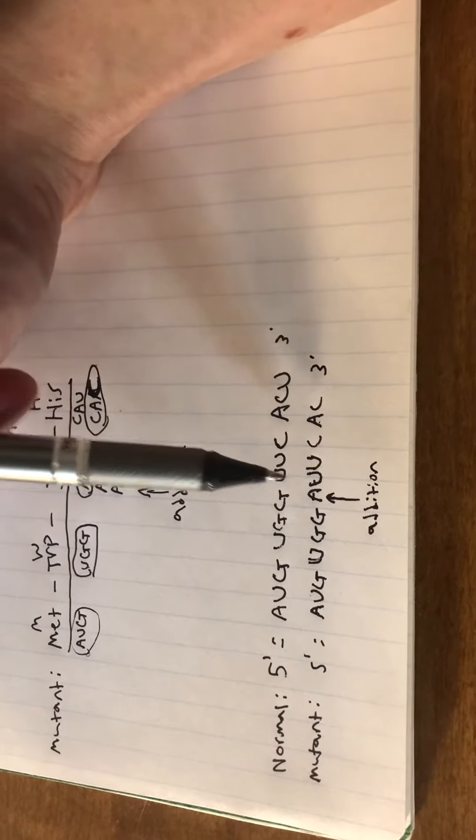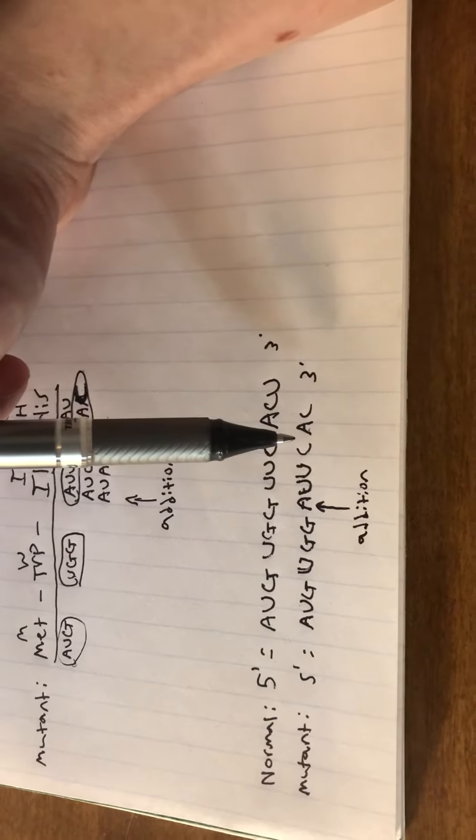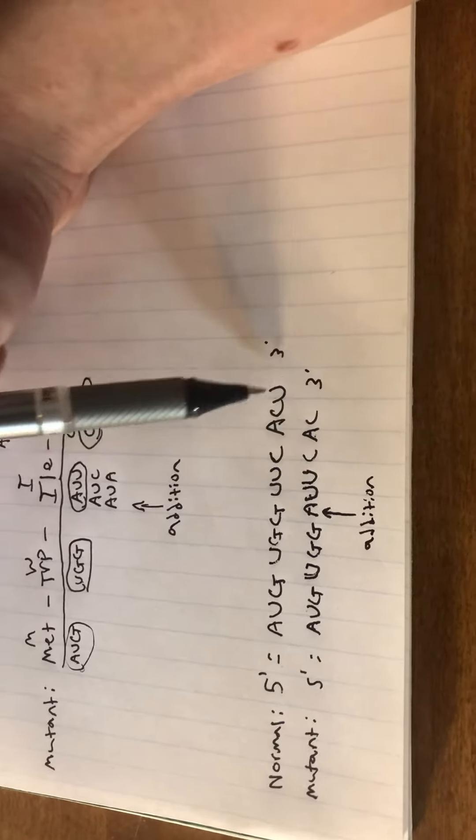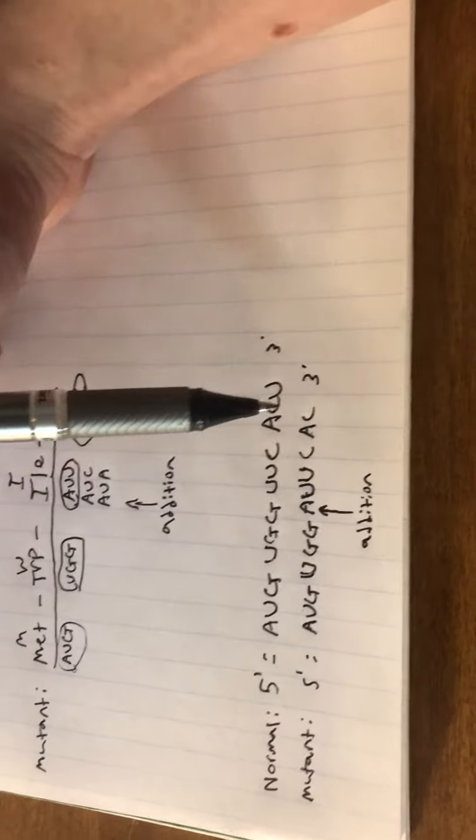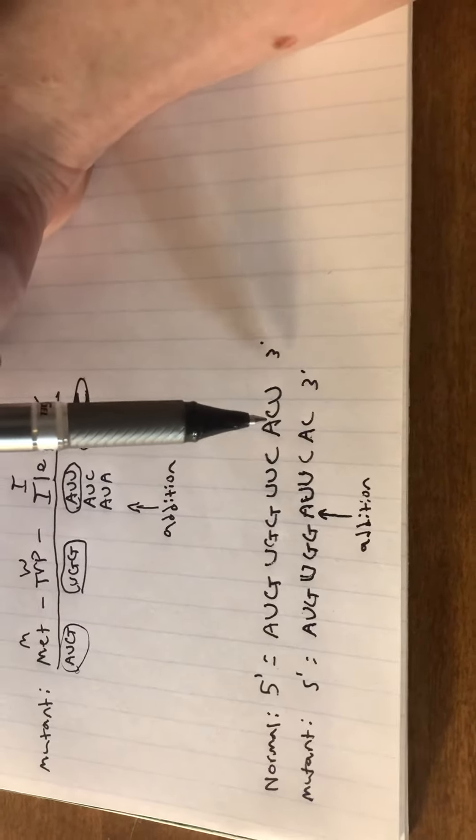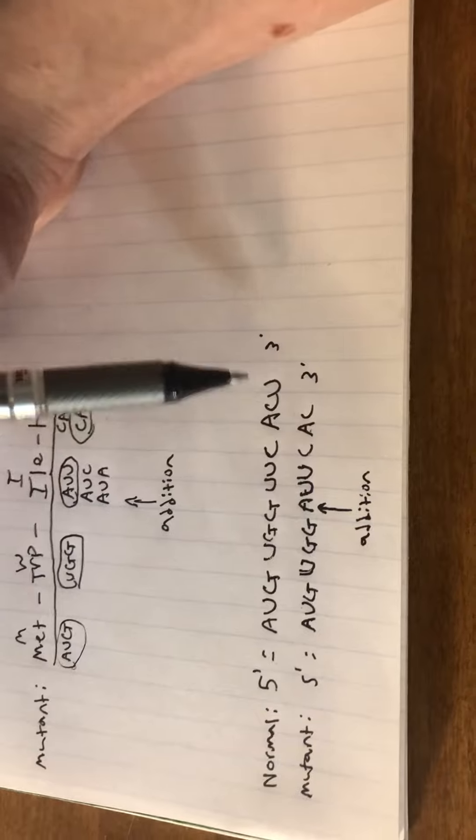This UCC is one codon, but then we get AUC and then the next one is ACU, so CAC, which is a completely different amino acid than either UCC or ACU.